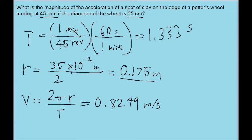So now we have everything we need. The magnitude of the acceleration, this is centripetal acceleration, is going to be the square of this speed divided by r.